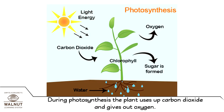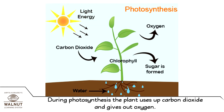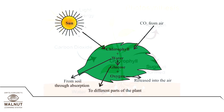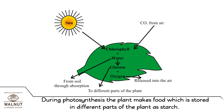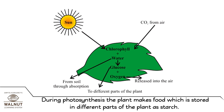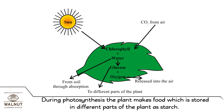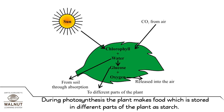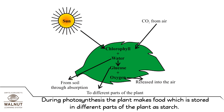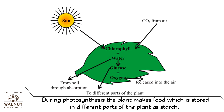During photosynthesis, the plant uses up carbon dioxide and gives out oxygen. The plant makes food which is stored in different parts of the plant as starch.